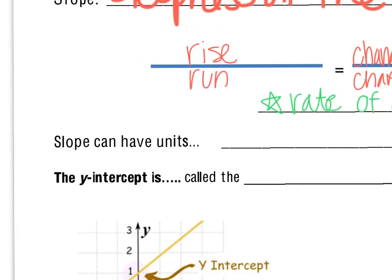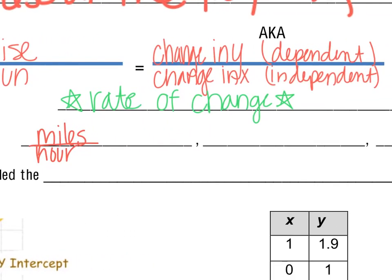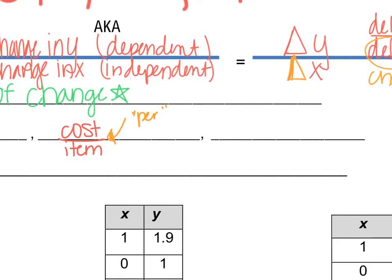Sometimes our slope can have units — this is where the 'per amount' definition comes into play. Think about phrases with the word 'per': miles per hour, cost per item, feet per second. The division line represents the word 'per.' These are all examples of slope expressed with units.